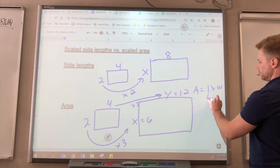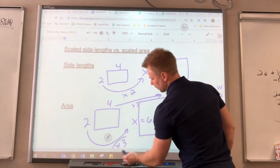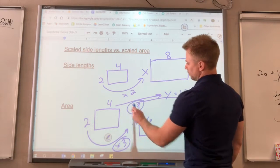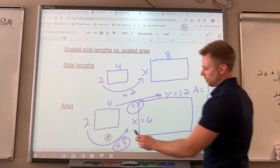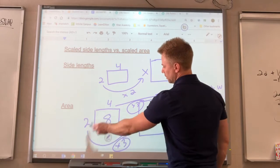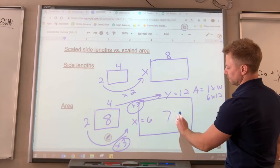In order to do length times width to find the area, so we're multiplying by 3 not once, but we're actually multiplying by 3 twice. The area of the small one is 8, 2 times 4 is 8, the area of this big one is going to be 72.